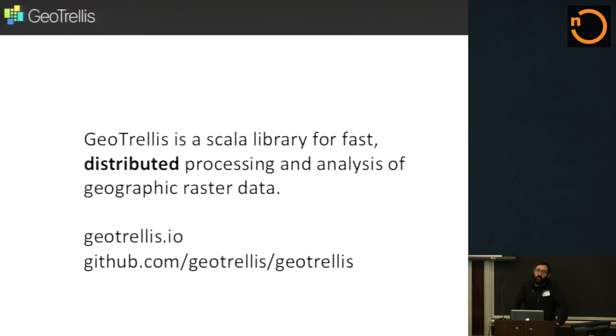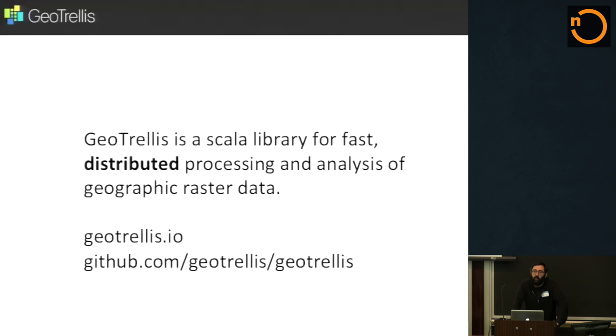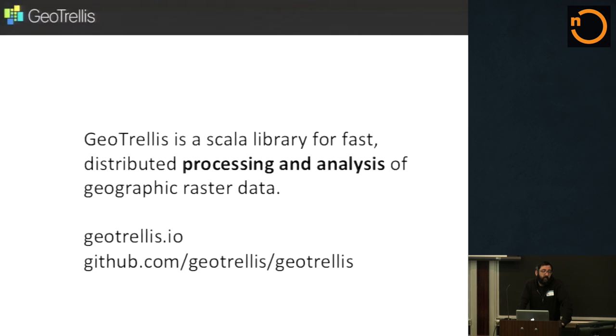GeoTrellis is a Scala library for fast distributed processing and analysis of geographic raster data. When I say it's fast, it's designed to be low latency so that you can see the results of analysis you want to do in real time, in web time. We use this to build both interactive web services as well as more batch processing projects that have a time component, and efficiency has been a big piece of this project. Distributed in that we define a data pipeline, and GeoTrellis will automatically either parallelize that or let you distribute it over machines. Processing analysis in that there's a set of techniques used in geographic information systems to transform raster data, a number of which are implemented in GeoTrellis.